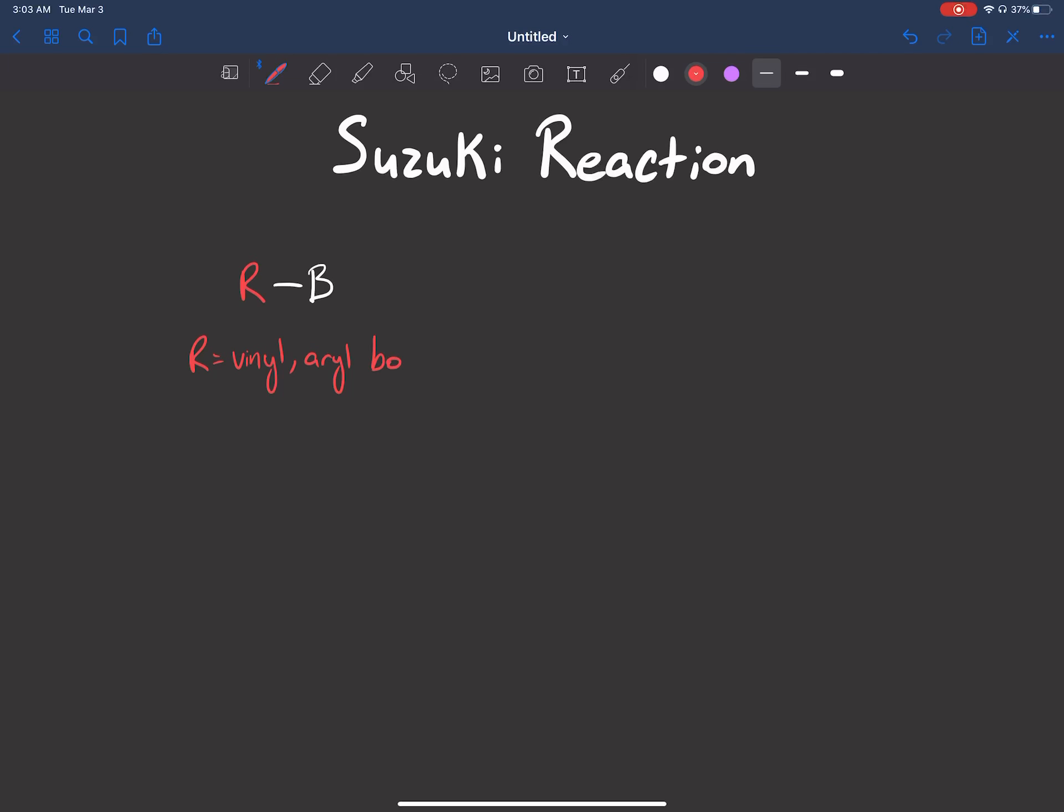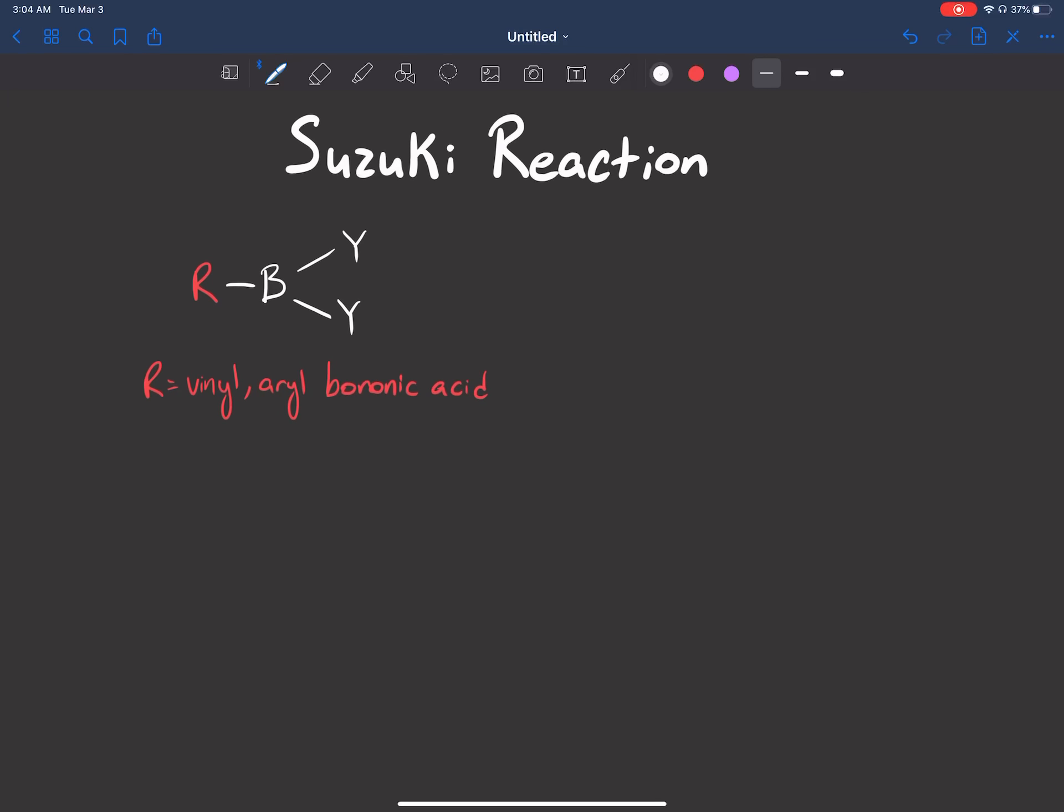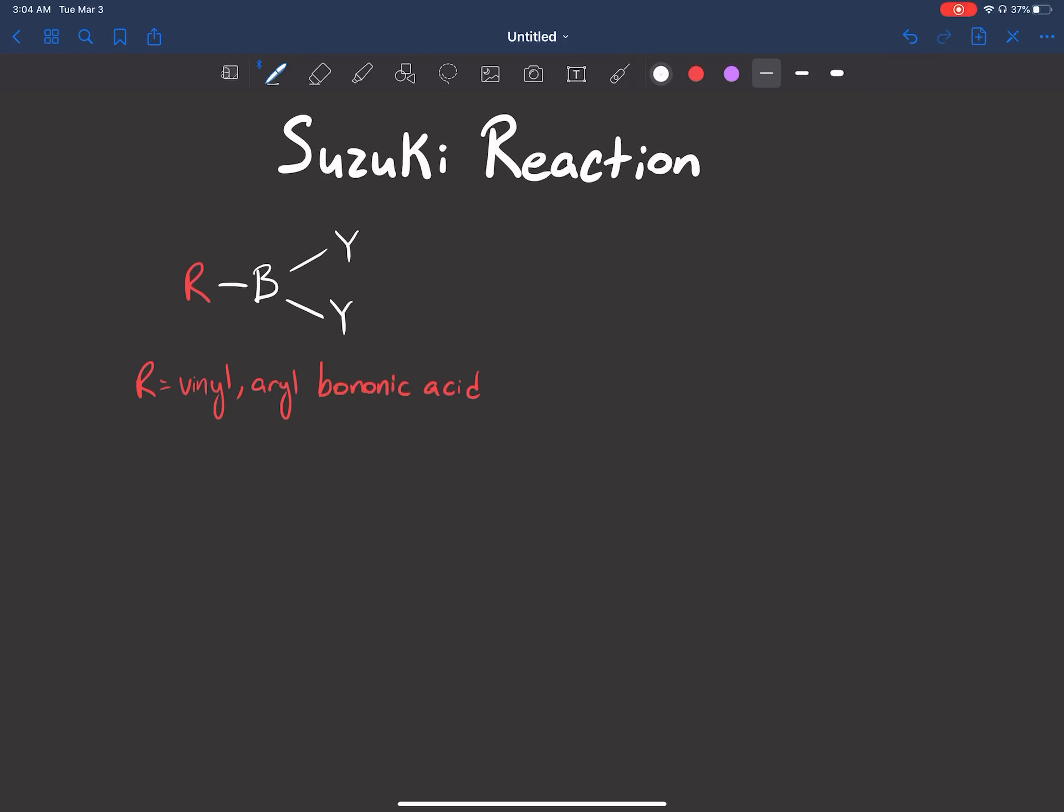So R can either be a vinyl group or an aryl boronic acid. Vinyl boronic acid or an aryl boronic acid. Now, attached to that boron, we have these groups that I'm just going to label as Y. You'll see what they are in a sec, and they're not too important for this general roadmap.